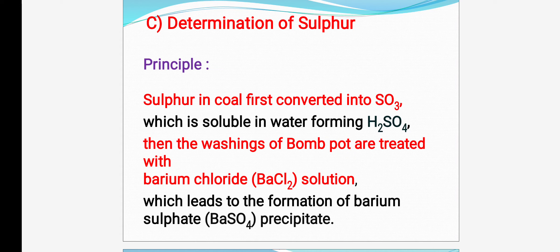Then take the washing of the bomb pot. That washing we have to treat with barium chloride, BaCl2. We have to take out the bomb pot from the calorimeter and remove the lid. Whatever liquid is at the bottom of the bomb pot, we take it in a beaker and add BaCl2. BaCl2 reacts with H2SO4 and it produces a precipitate of barium sulfate. So, barium sulfate precipitate is produced after the reaction between H2SO4 and BaCl2.